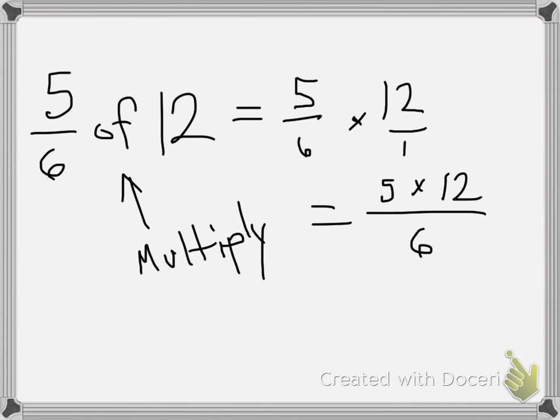I do 5 times 12 on the side. 5 times 2 is 10, carry the 1. 5 times 1 is 5 plus 1 is 6, so it's 60. Wait, I mean 60 over 6—the denominator stays 6.